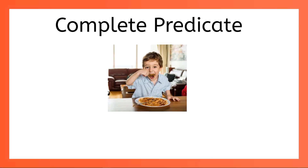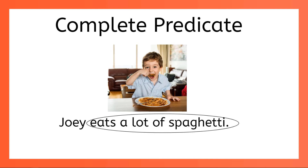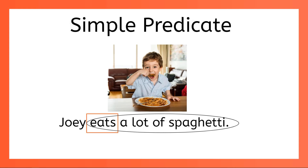Let's return to the fact that every predicate contains a verb. In the sentence Joey eats a lot of spaghetti, the complete predicate is eats a lot of spaghetti. The verb in that complete predicate is eats. The verb eats is actually what we call the simple predicate of the sentence.